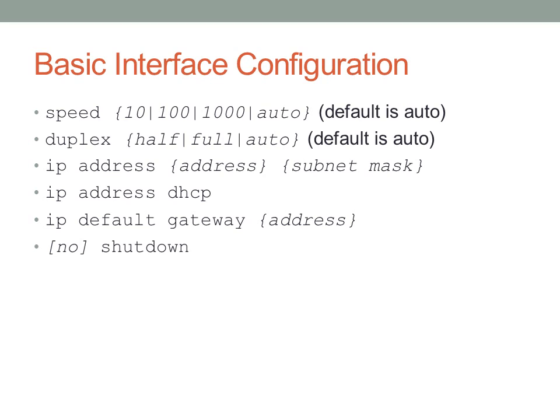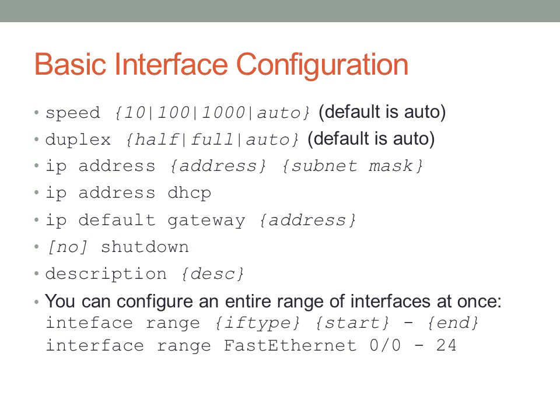You can enable or disable individual interfaces or entire VLANs with the shutdown command — for short, 'shut' or 'no shut'. You can also add port descriptions, which is very handy for administrators who want to determine the role of a port or who's connected. You can configure interface ranges, which makes configuration faster by applying the same configuration to multiple ports at once, and basically saves you a lot of time.